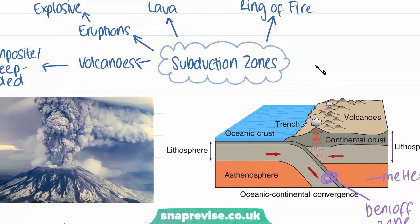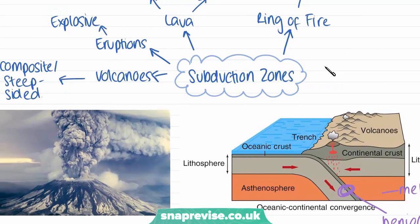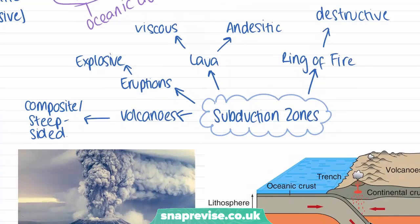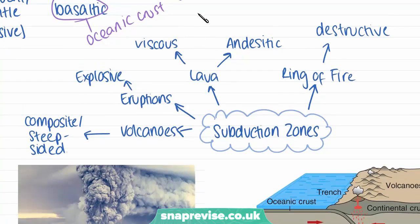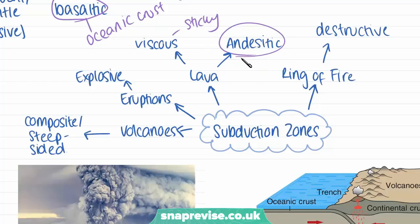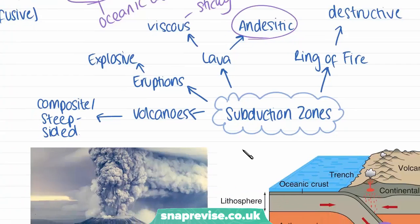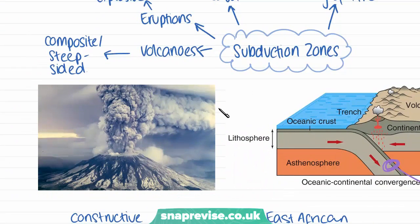These volcanoes are very different to those at ocean ridges because they have a very different type of lava. Their lava is more viscous, which means it doesn't run as much — it's more sticky. This lava is described as andesitic lava. Because of the stickiness of the lava, the eruptions are more explosive and we have steeper-sided volcanoes, such as Mount St. Helens in North America, whose last eruption was in 1980.